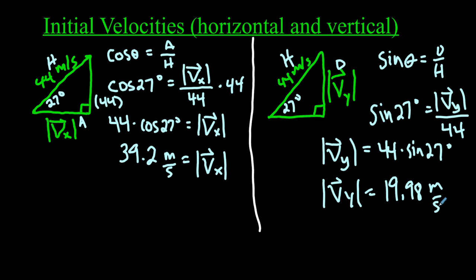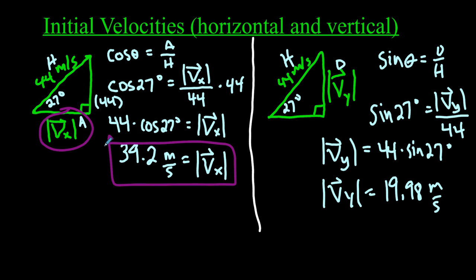So the v sub y tells us how fast the ball is moving up when hit, and v sub x tells us how fast it's moving horizontally away from Charlie Harris — in the x direction. These are the initial velocities at the moment of impact. We're going to use those initial velocities to figure out how long it takes for the ball to hit the ground and how far it travels once it does.